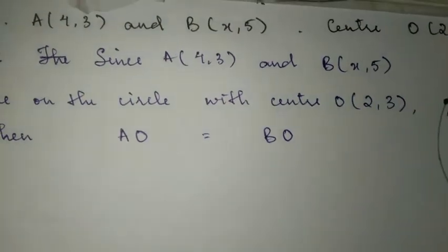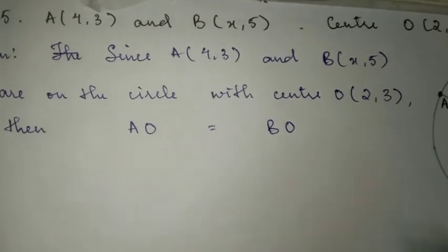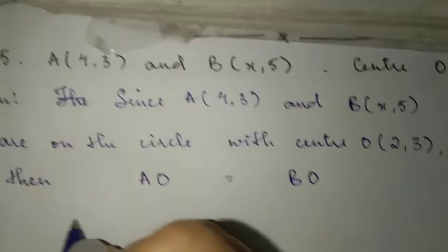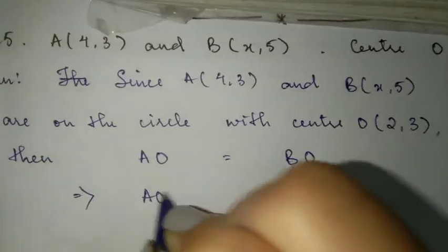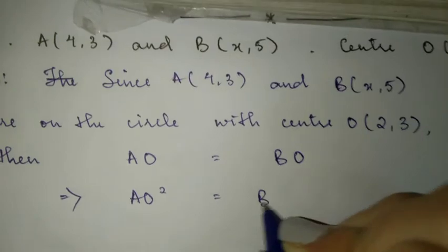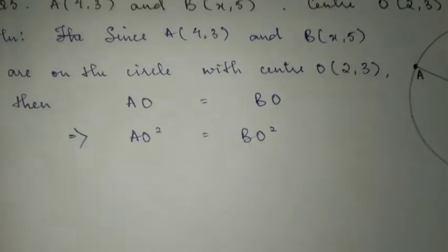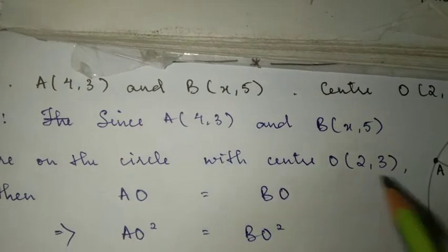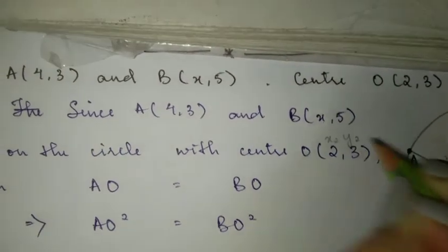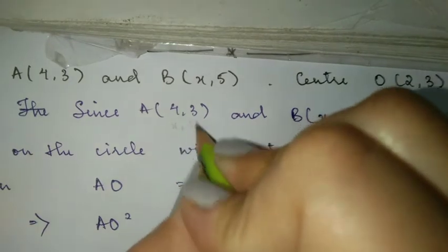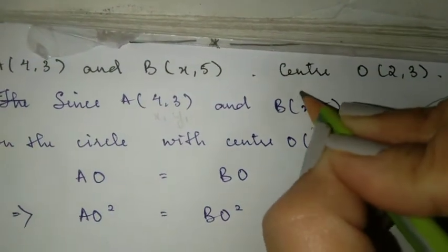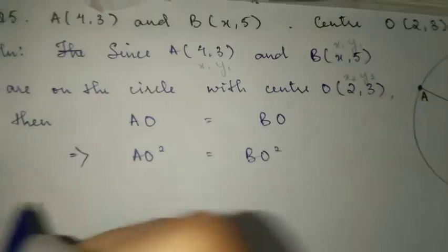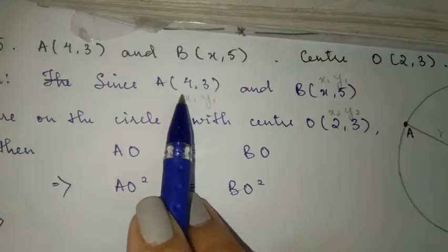So this will imply that AO squared is equal to BO squared. You have x2 y2 for AO and x1 y1 for BO, all right? So we can solve it like how we solve the rest of the questions, okay?